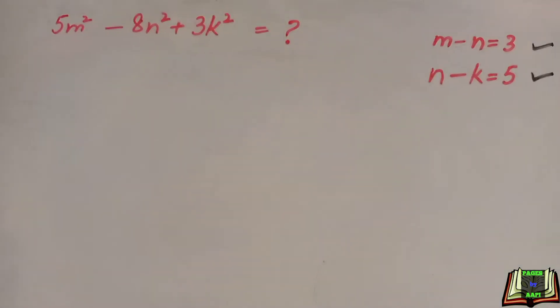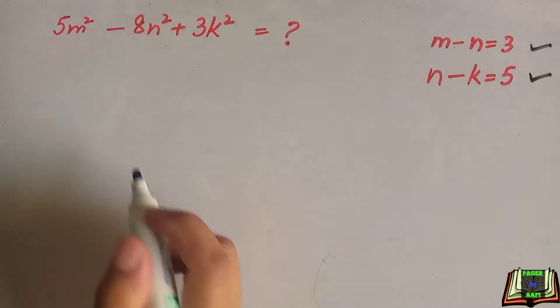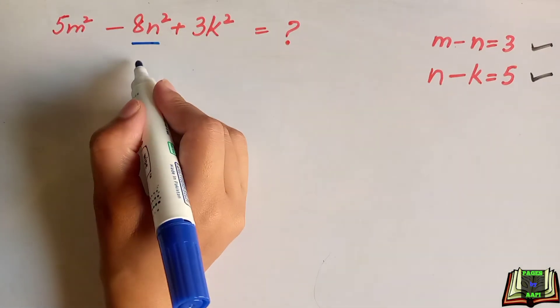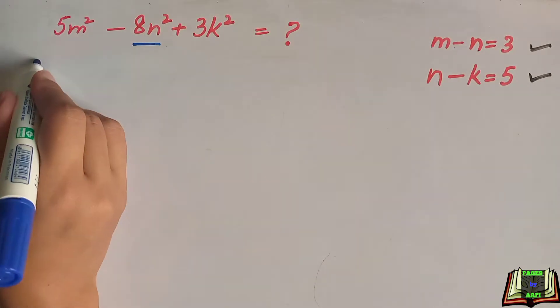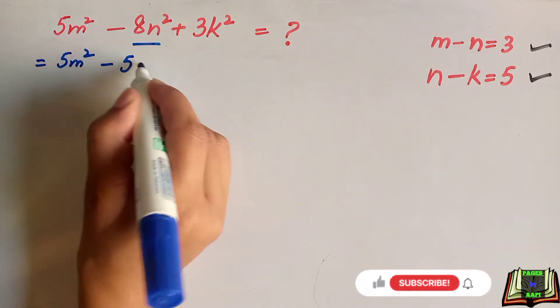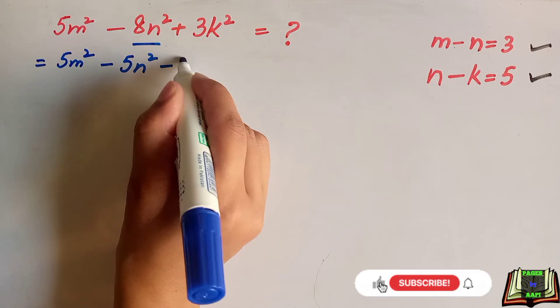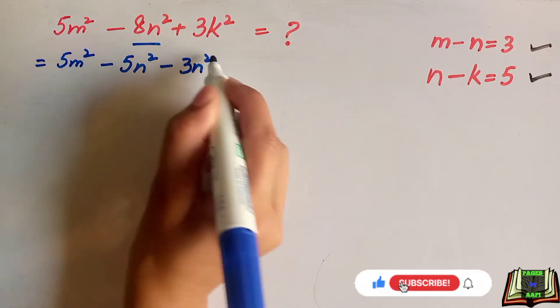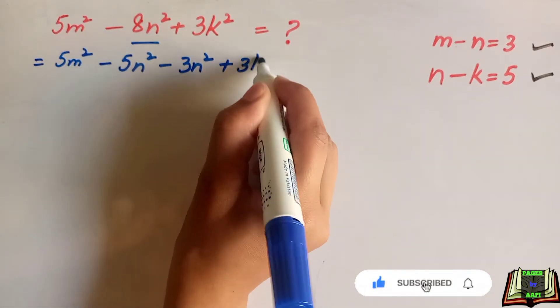We are going to substitute these values to solve this equation. So let's get started. First of all, we will split the middle value. We can write it as 5m² minus 5n² minus 3n² plus 3k².